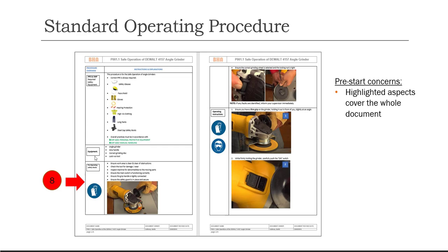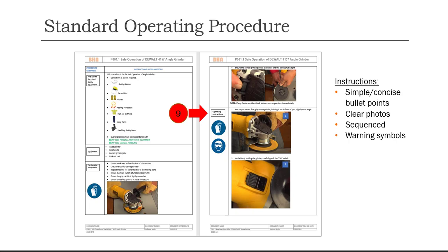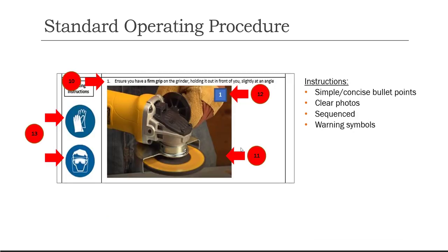The third row is set aside for any pre-operating steps or checks. Since we haven't started the task yet, this is the way to set up any pre-start checks to ensure we're ready for the procedure. Then comes the bulk of the procedure — the bulk of the instructions. Note that they're simple and clear, concise points numbered according to the steps. I highly recommend keeping this information to one or two sentences, as the photo will tell most of the story. Regarding the photos, they've got to be clear and easy to understand. Check that the process step is correctly communicated by the photo and the bullet point.